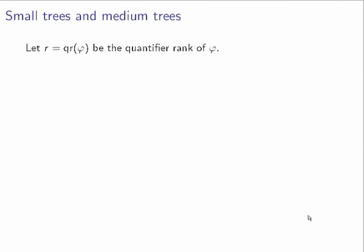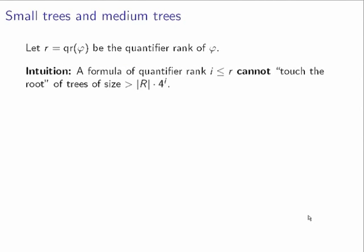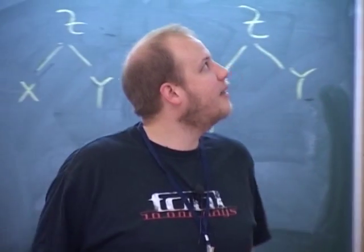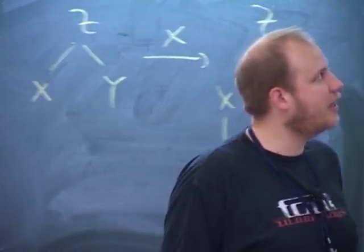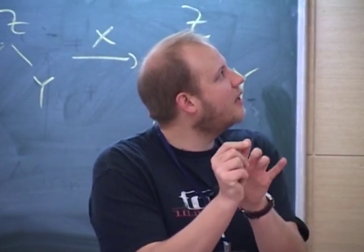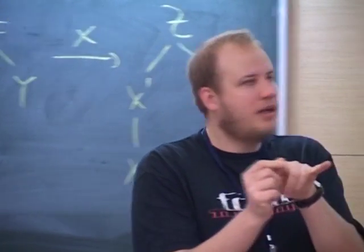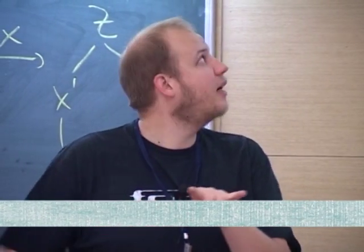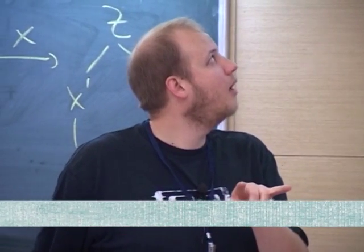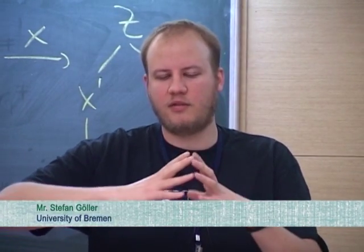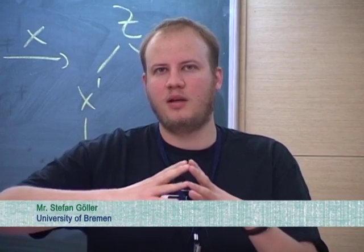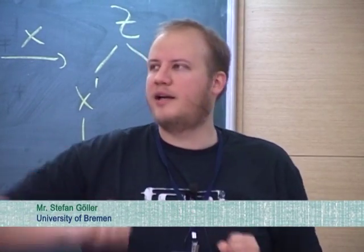Let R be the quantifier rank of the formula. The intuition is that a formula of quantifier rank i cannot touch any tree of size |ground rewrite system| × 4^i. If you have a large enough tree, the formula cannot touch the leaves — the tree is too big.